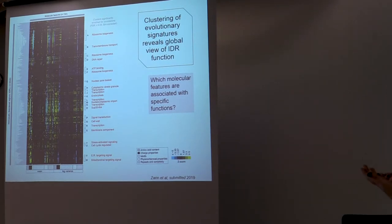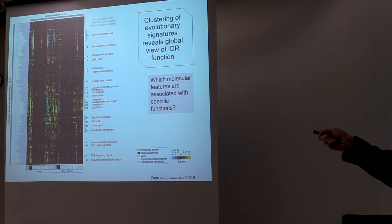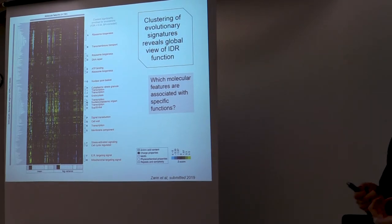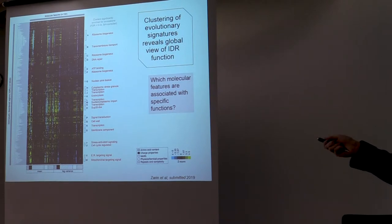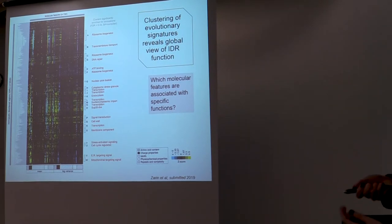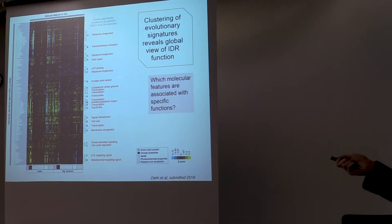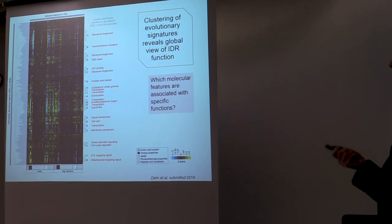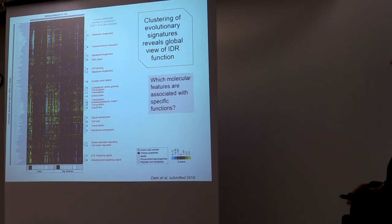And the really surprising thing that we found was that based on these molecular features in these diverged disordered regions, we can actually find groups of disordered regions that share evolutionary signatures, and that are associated with very specific biological functions. So just some examples are these disordered regions associated with ribosome biogenesis, the nuclear pore basket, cytoplasmic stress granules. There's various clusters associated with transcription, signal transduction, the cell wall, and so on.